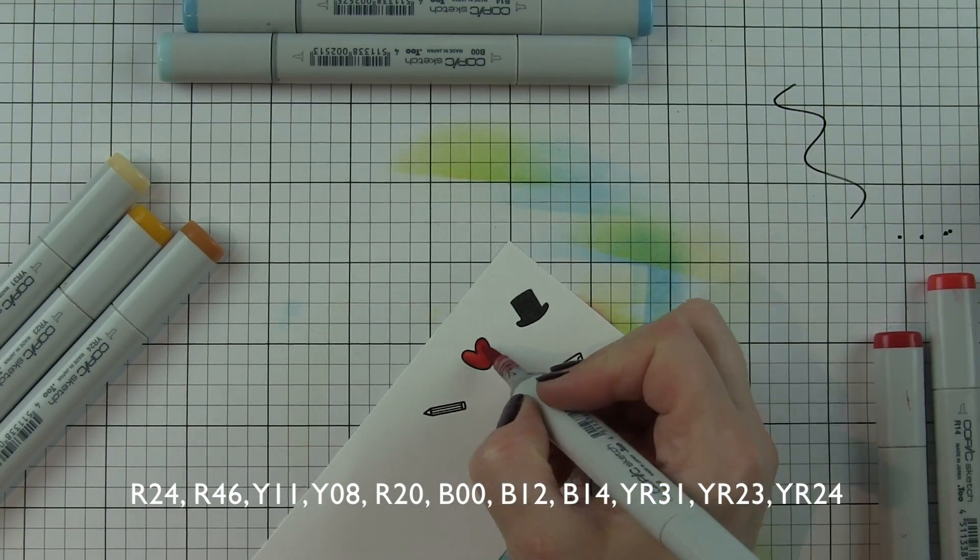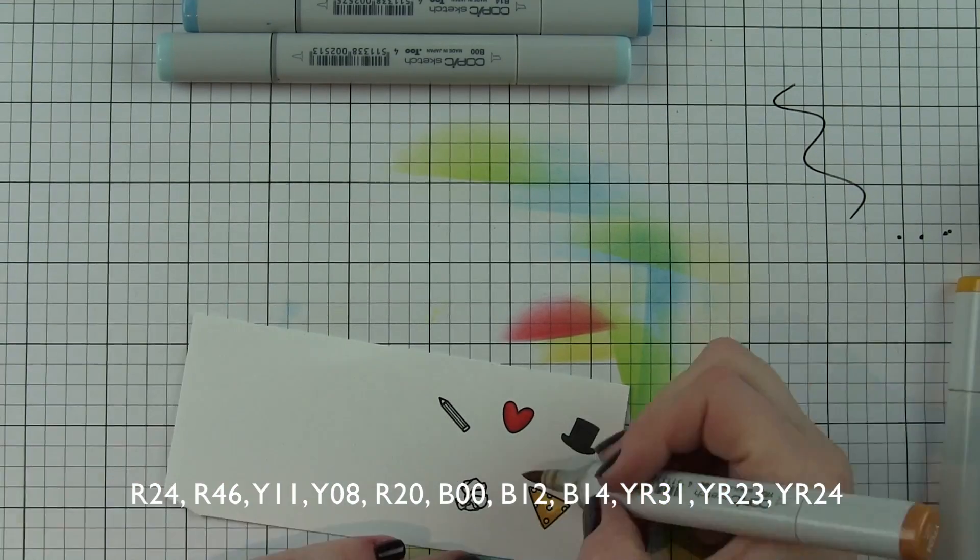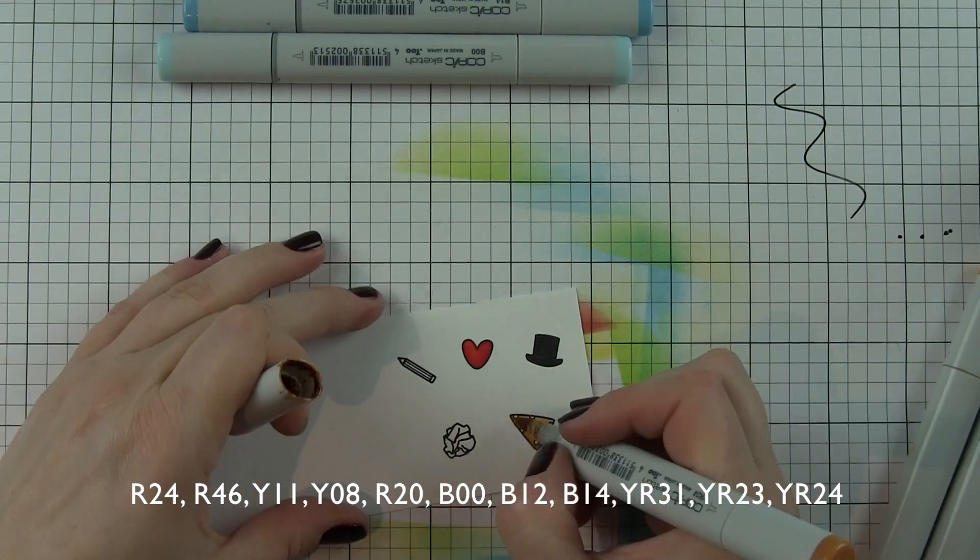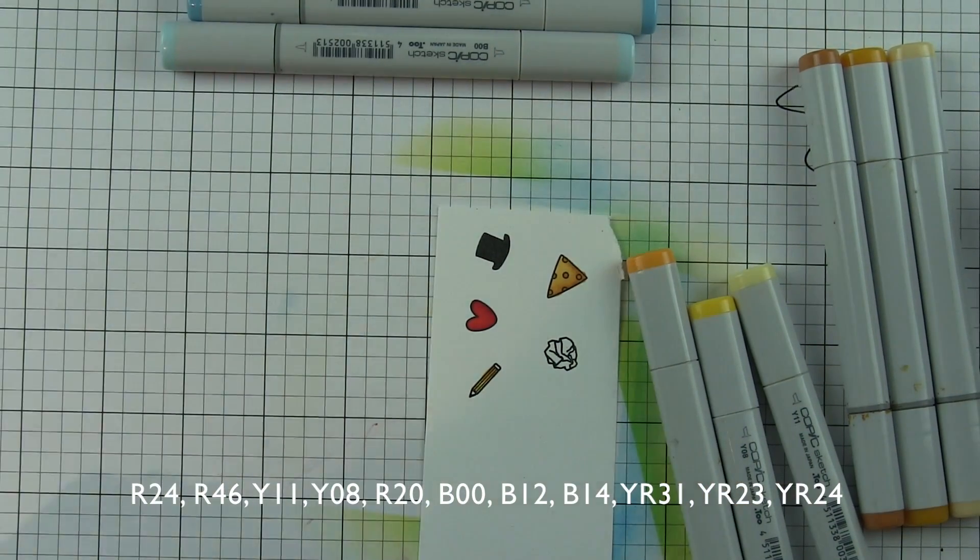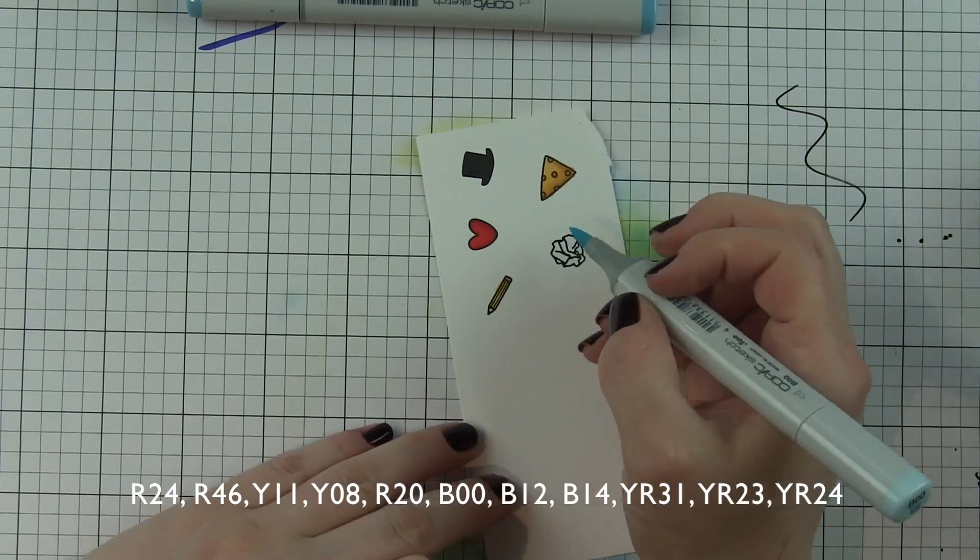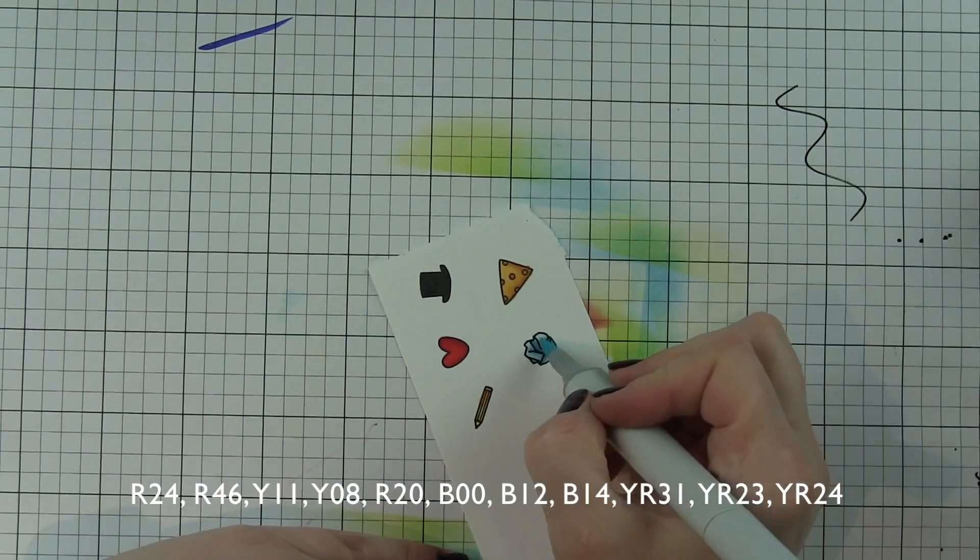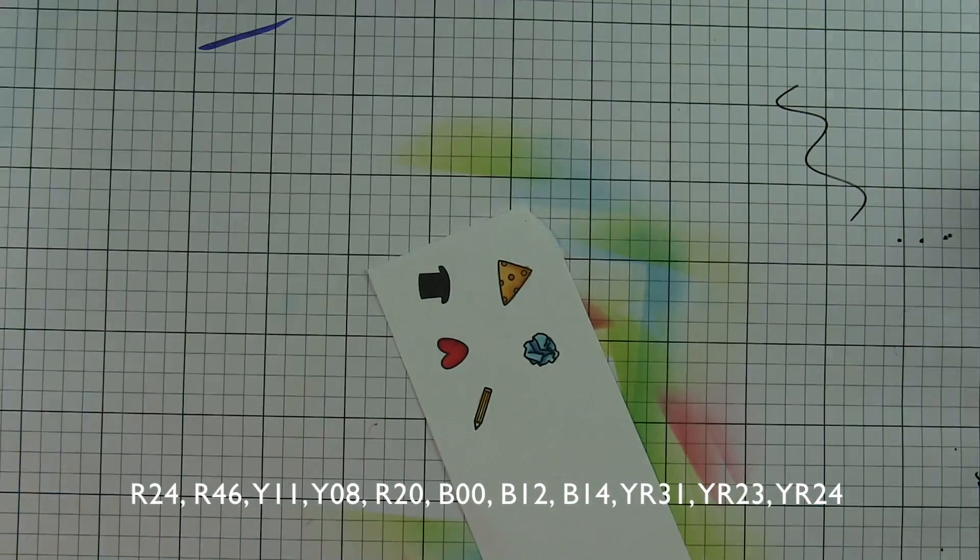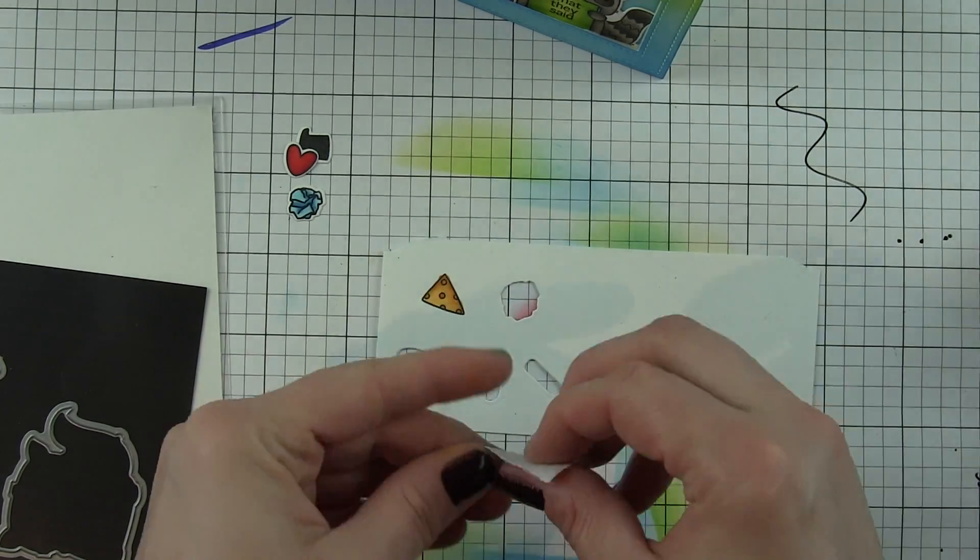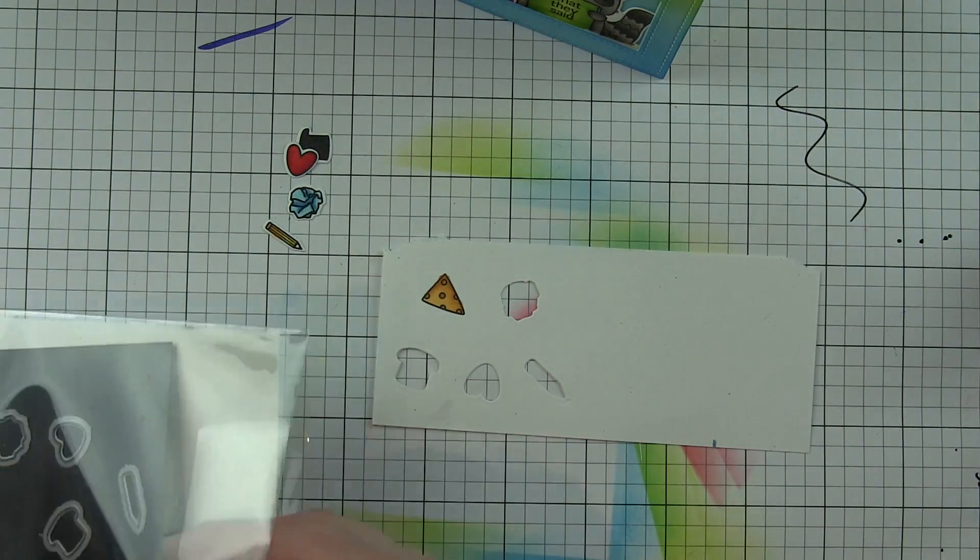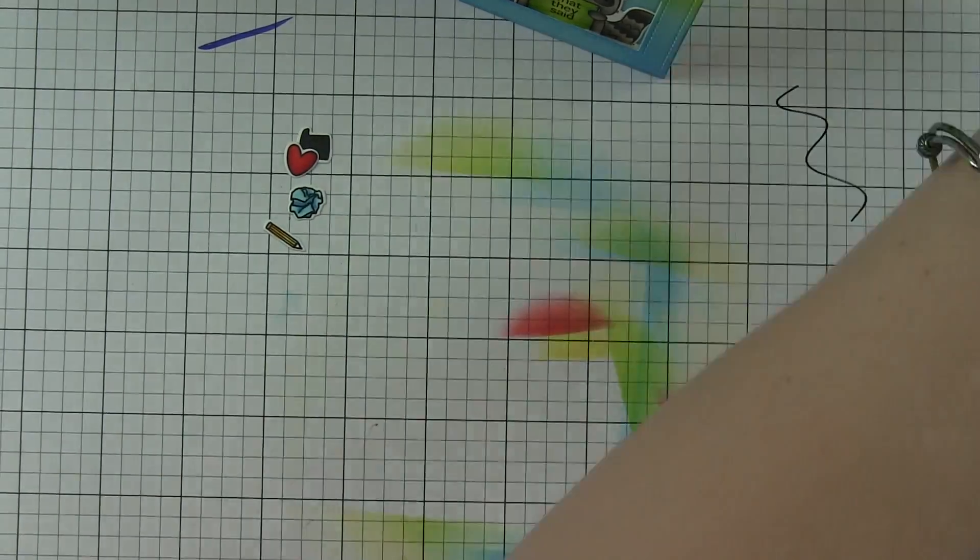All these little accessory images were stamped with some jet black ink on a scrap of smooth white cardstock and are colored in with some copic markers. The cheese is the only image that is from dos amigos. The wadded up paper and pencil are also in the dos amigos but I'm using them from the three amigos stamp set. The wadded up paper is going to be in the blue color. The hat is a solid black - it's just a solid image so no coloring was needed for that.